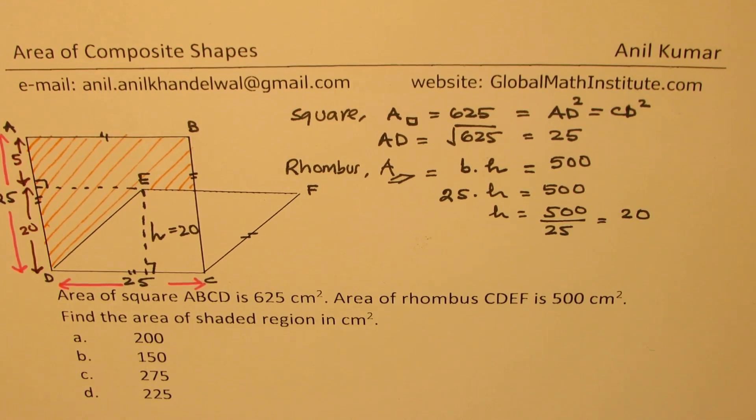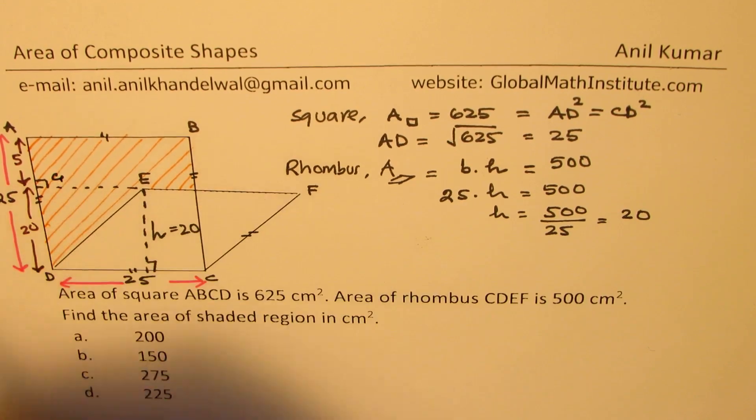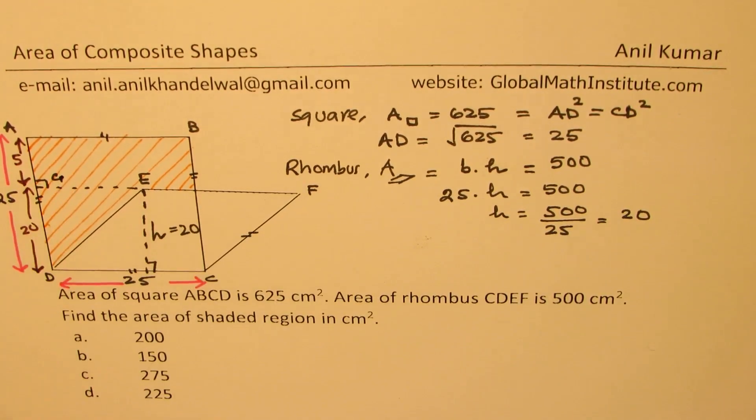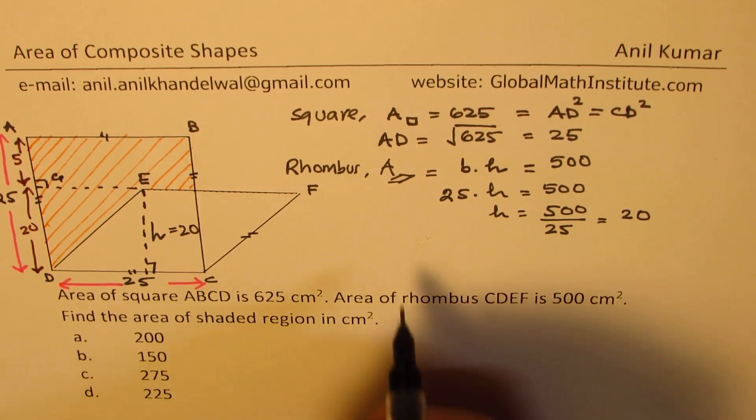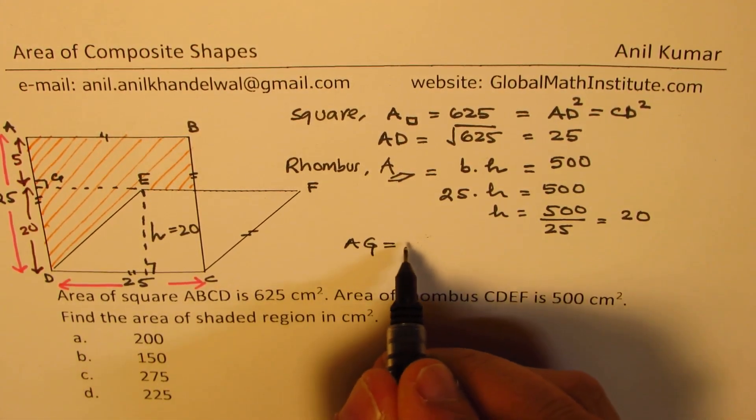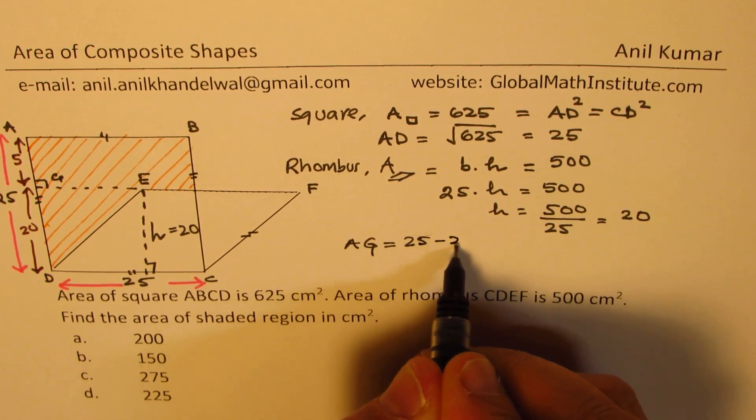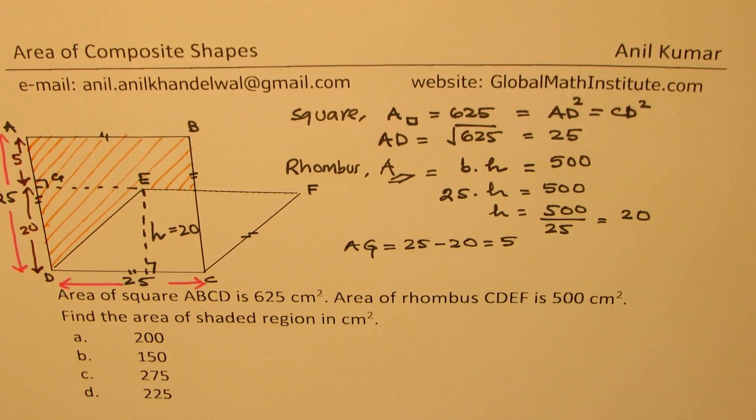Now, let me label this point as G. So from here, what we just worked out is that A to G is 25 minus 20, and that is 5. All in centimeters.